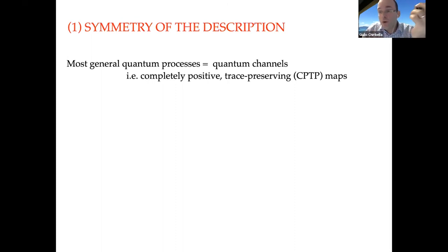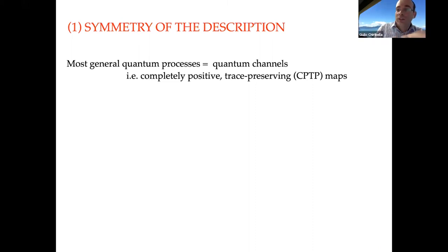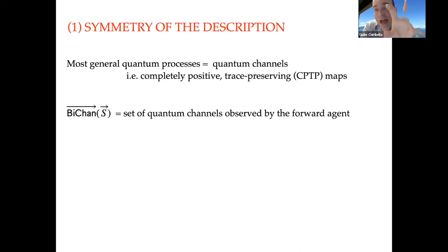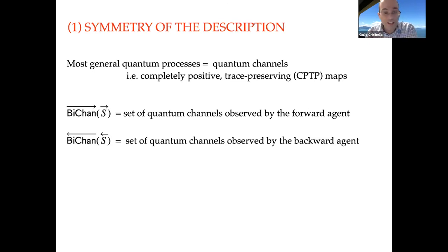I will give four axioms. The first is the symmetry of the description between the forward and backward agents. In quantum theory the most general quantum process is described by a quantum channel — a completely positive trace-preserving linear map. The set of processes the forward agent sees will be denoted with arrows going left to right. The set of all bidirectional processes will be some subset. For the backward-facing agent there will be another set that is a subset of all quantum channels.